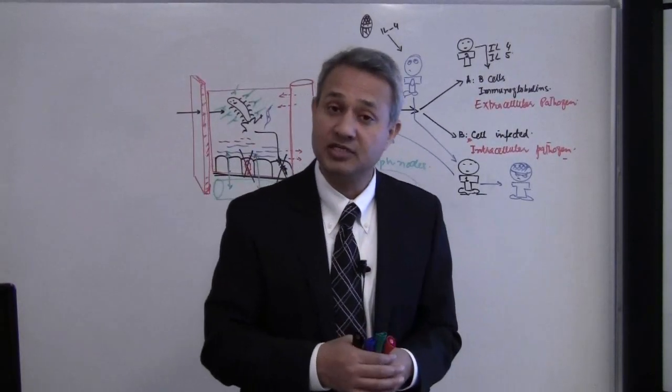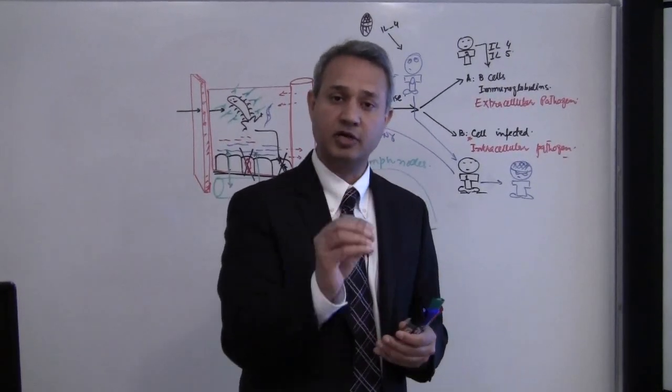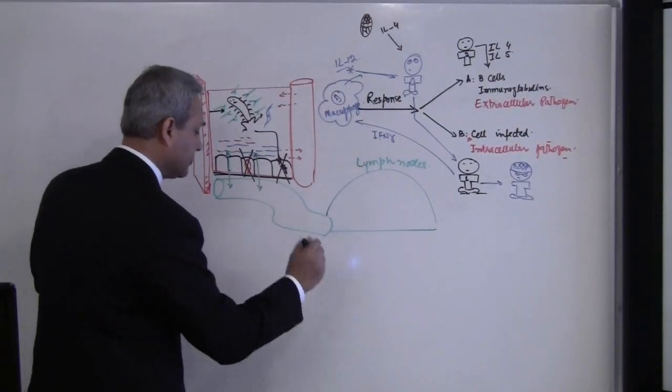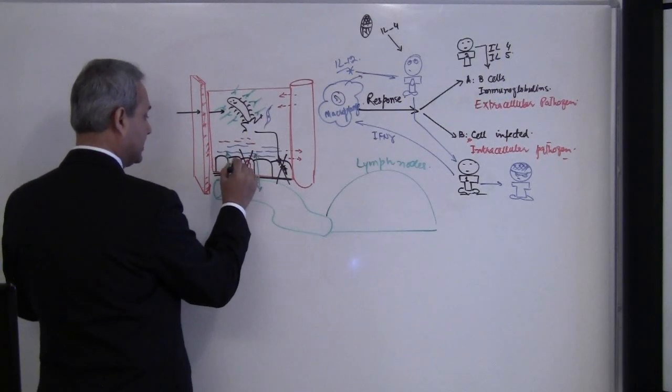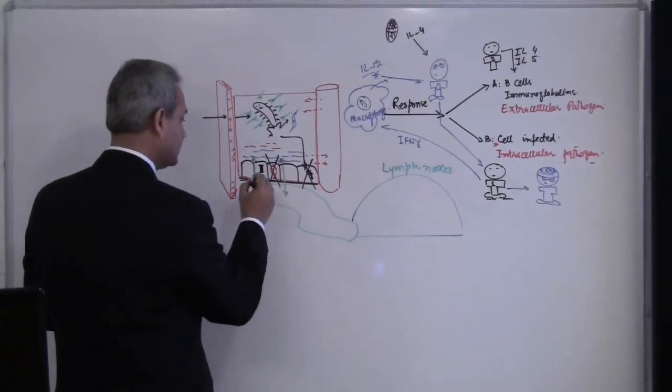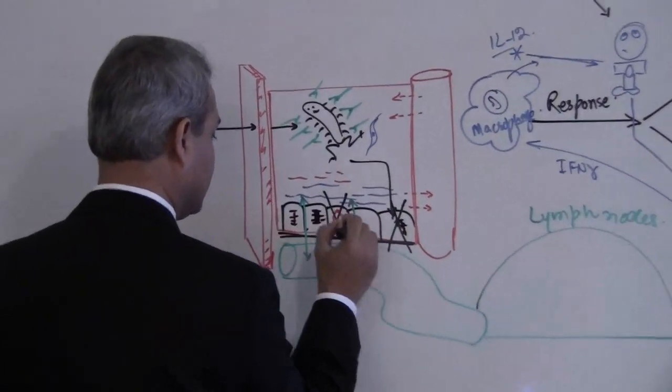So what is a good example of this situation? A good example is lepromatous leprosy. Mycobacterium leprae is a good example. Why? Because mycobacterium leprae likes to go and sit inside the cells. This pathogen likes to be inside the cell, it is an intracellular pathogen.